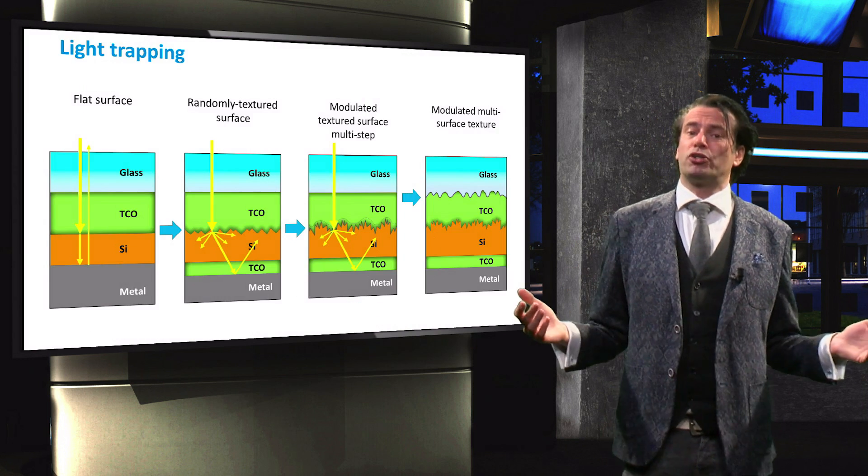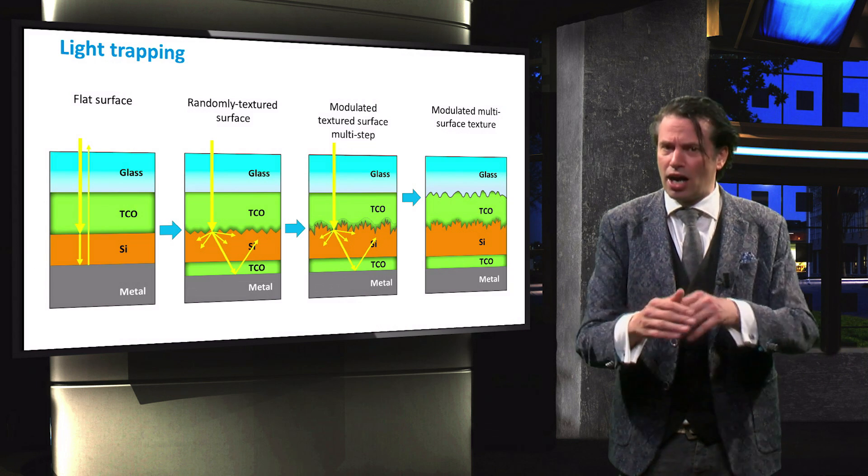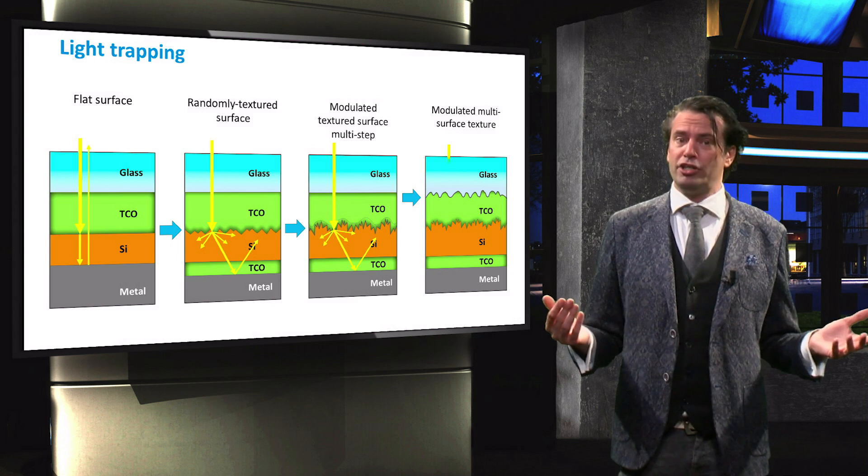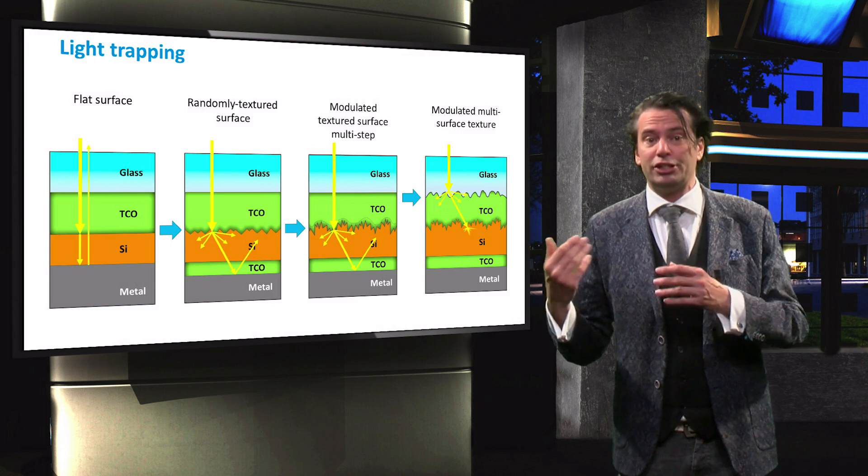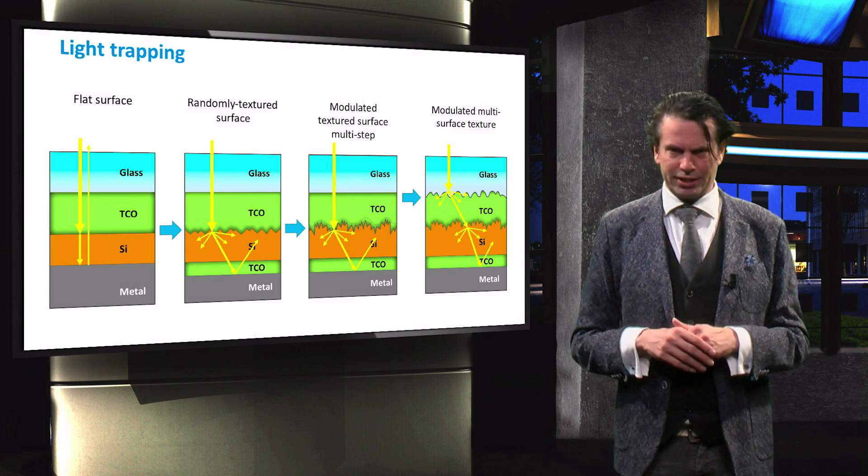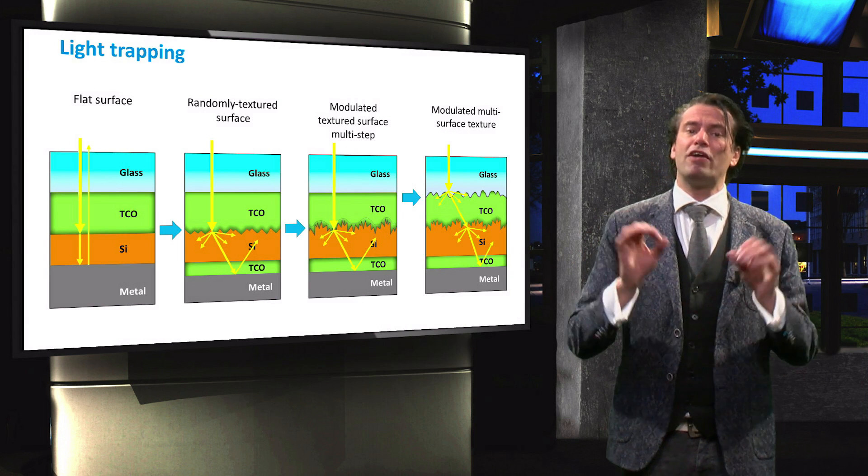Another approach to realize modulated surface texture is to apply a large scale texture in the glass substrate. For this method, the size of the surface features on both TCO interfaces is decoupled to even further increase the scattering effectiveness and wavelength range.